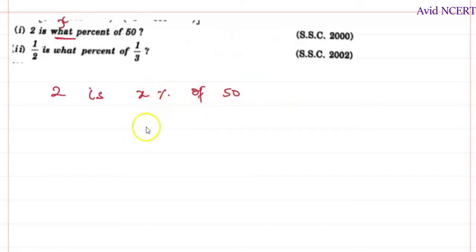So when they say percent, it is 100. So x by 100 times multiply by 50 equals 2. The answer we get is 2.